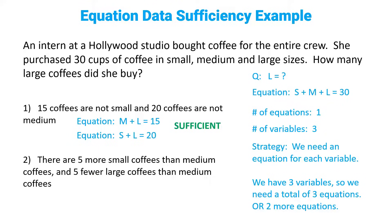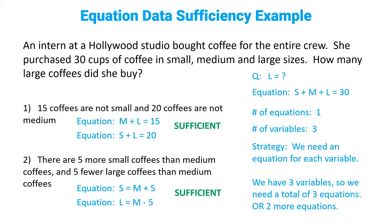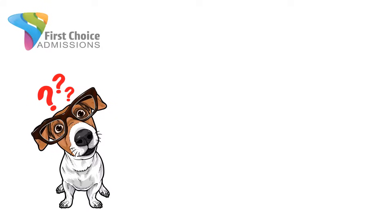Statement two says there are five more small coffees than medium coffees and five fewer large coffees than medium coffees. In math: five more small than medium means s equals m plus 5, and five fewer large than medium means l equals m minus 5. We were looking for two more equations and we got two more equations — that is also sufficient. This is answer choice D. Notice what we didn't do: we didn't calculate what L is. We just confirmed we have enough information to solve for L.